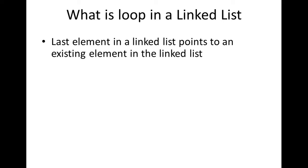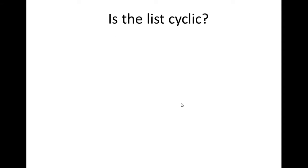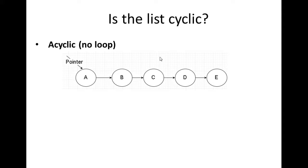Let's say we have a linked list containing values A, B, C, D, E, and the last element points back to an existing element. As you traverse the list — A, B, C, D, E — it makes its way back to B, then B to C, D, E, and the loop continues.